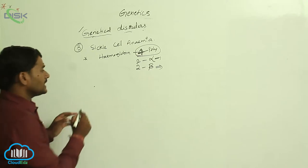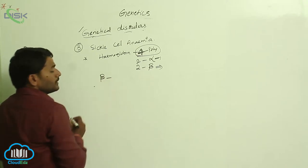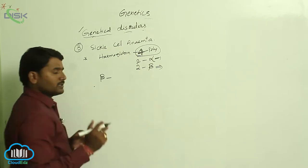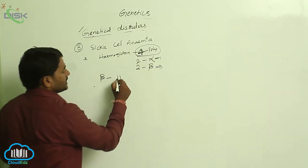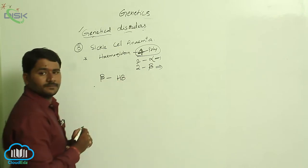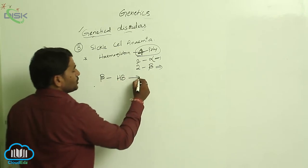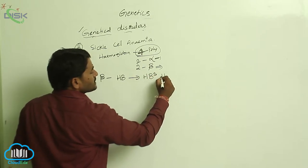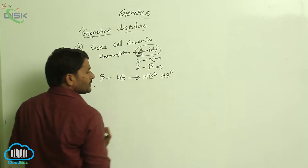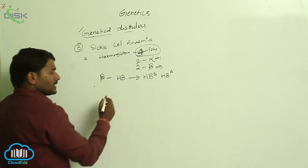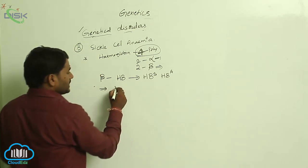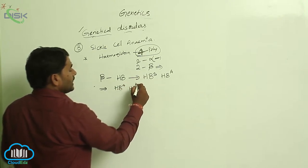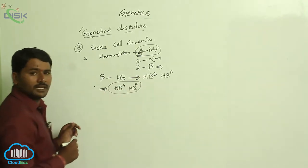The beta polypeptide chain production is controlled by a gene called Hb, and this gene has two alleles: HbS and HbA. Individuals with HbA/HbA genotype are normal.